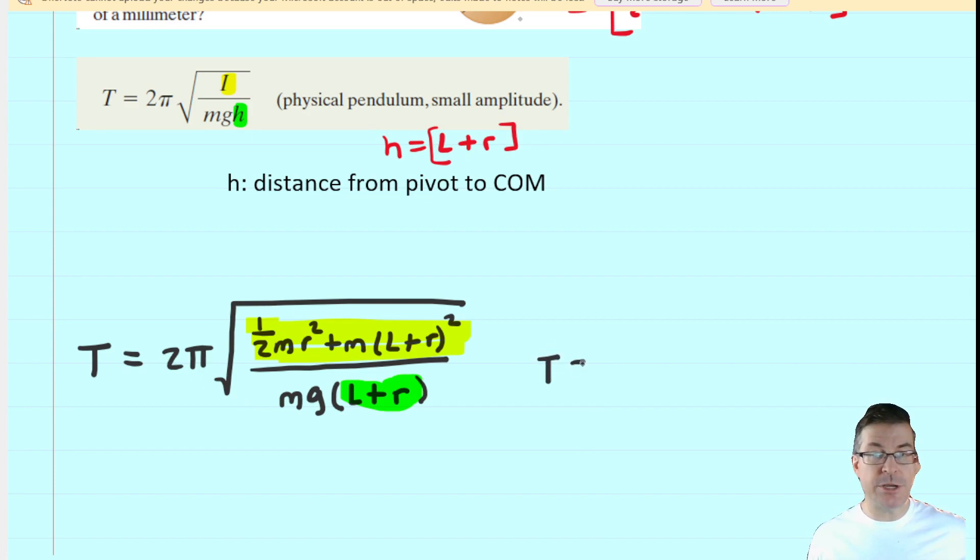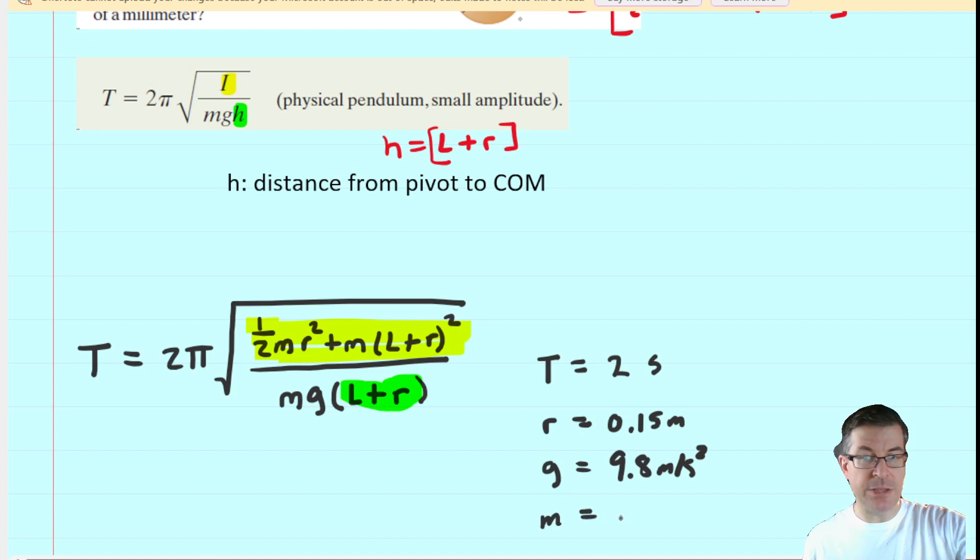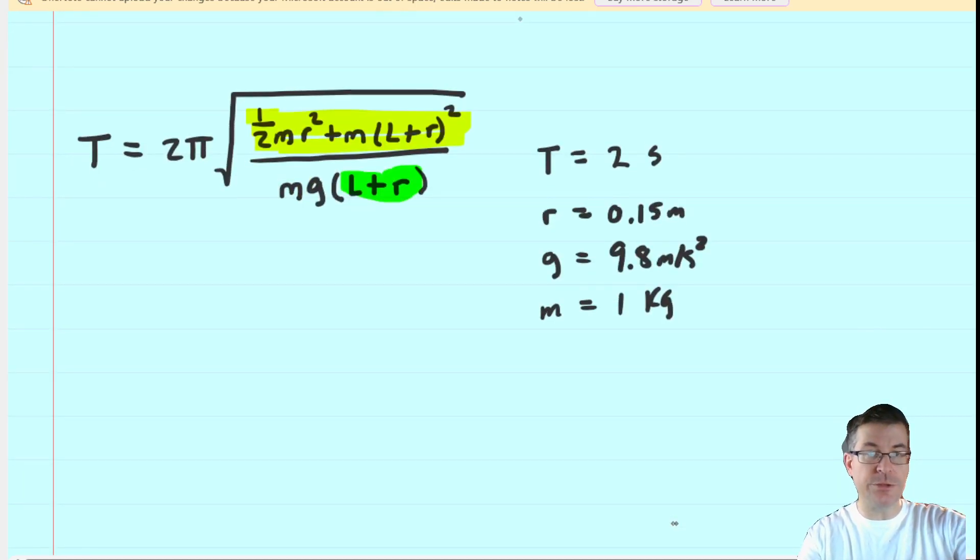The problem did state that the period of this pendulum is going to equal two seconds. It told us that the radius of the brass disc is fifteen centimeters, which of course is .15 meters. The question notes that g is 9.8 meters per second squared. And finally the mass of the disc is one kilogram. So we are just going to scoot down the page, and we are going to fill in those known values.